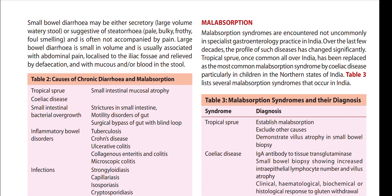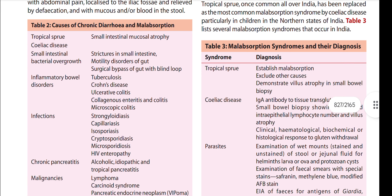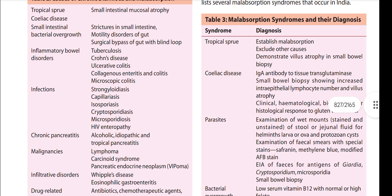Now, before we learn about Malabsorption Syndrome, we need to know that the duodenum absorbs iron, the jejunum absorbs folic acid, and the ileum absorbs vitamin B12. Malabsorption syndromes are not uncommonly encountered in specialist gastroenterology practice in India. Table 3 lists several malabsorption syndromes which are common in India.